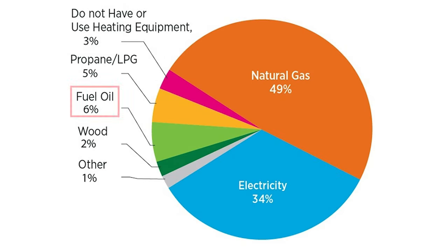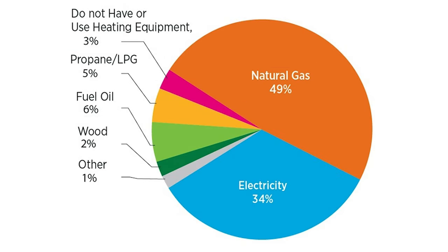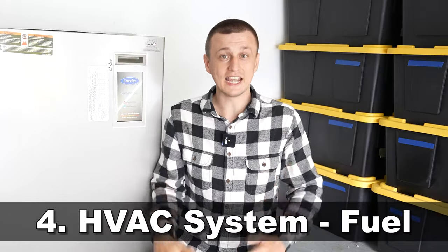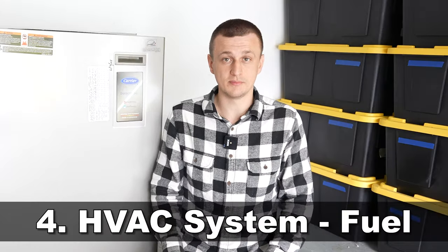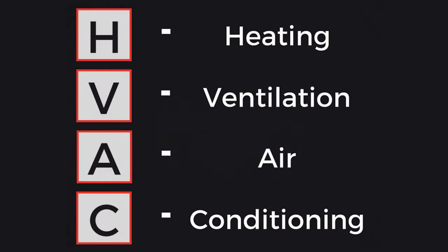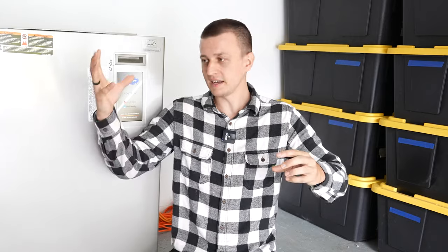A furnace can heat the air using some kind of a fuel source — either oil, natural gas, propane, or it can be electric. Which brings us to number four, a complete HVAC system. HVAC stands for heating, ventilation, and air conditioning. So if you combine an air conditioner split system with a furnace, that gets you an HVAC unit.